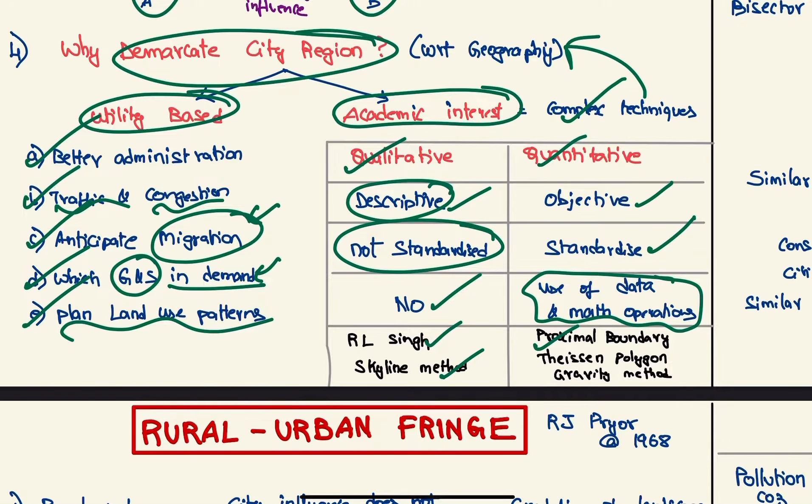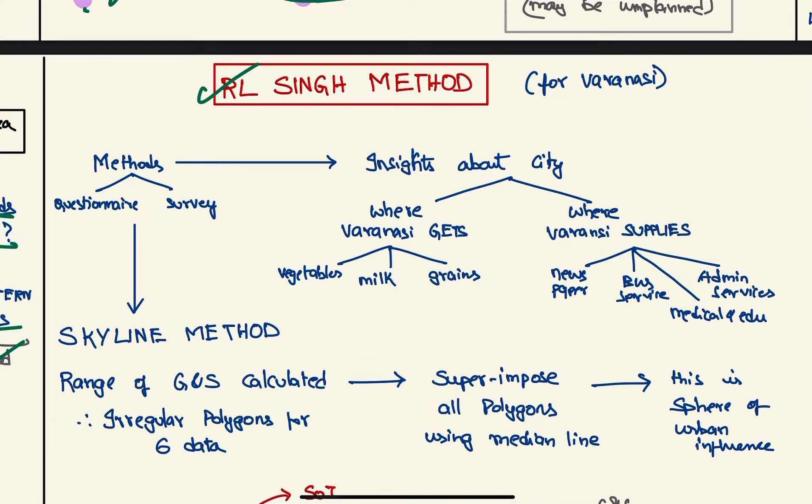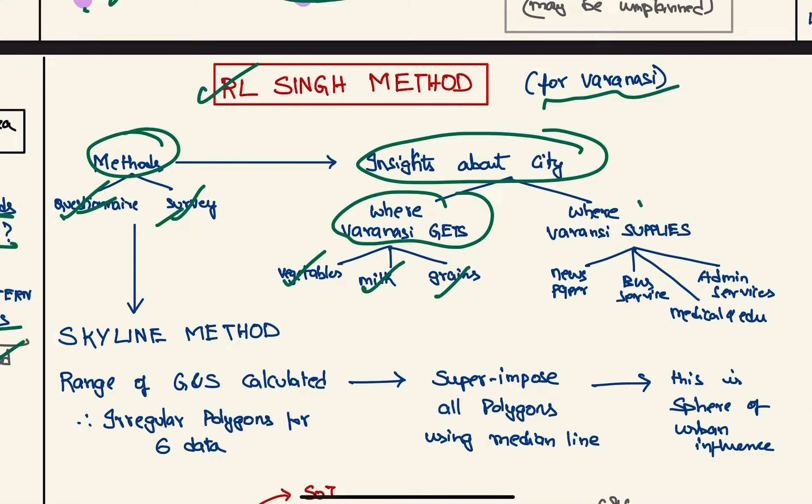So first let's see R.L. Singh method. He used this to demarcate the city region of Varanasi. First of all, the methods used by him are questionnaire and survey. Using the questionnaire and survey, he gets insights about where Varanasi gets its vegetables, milk, and grains, and where Varanasi supplies newspaper, bus service, medicine, and education services, and administrative services.